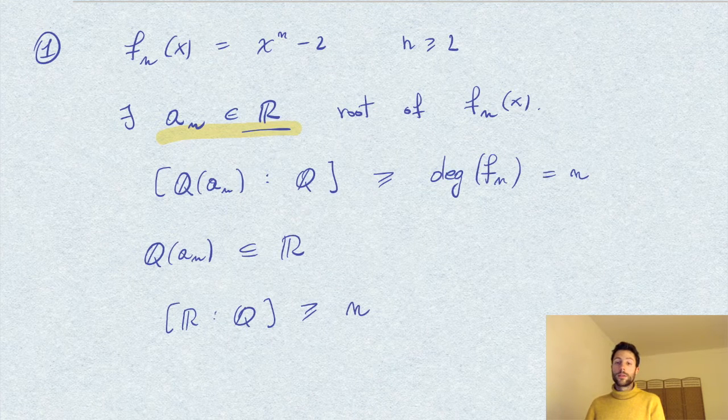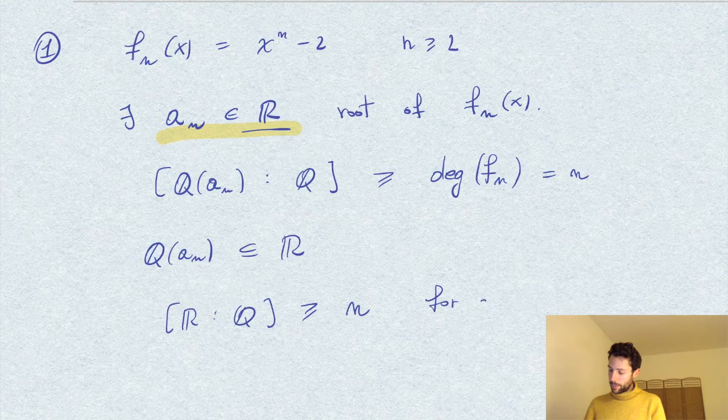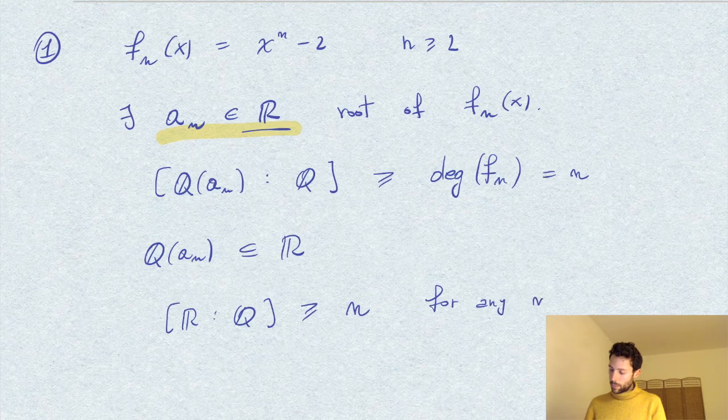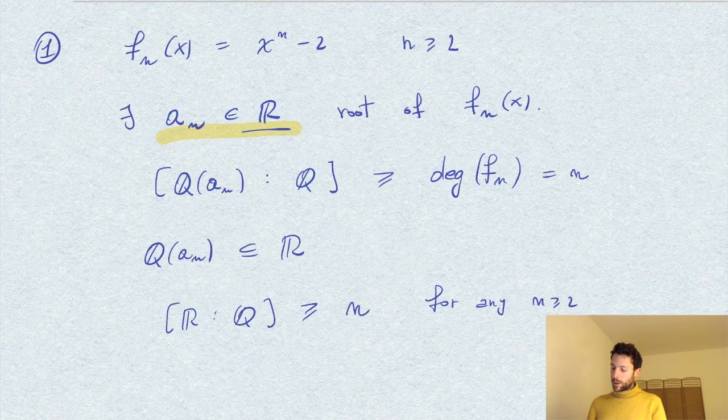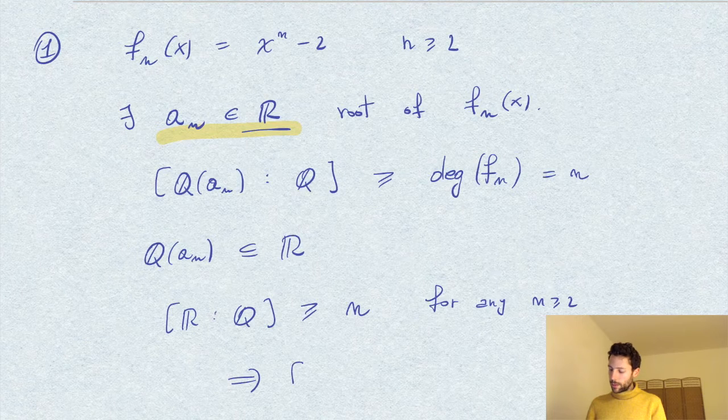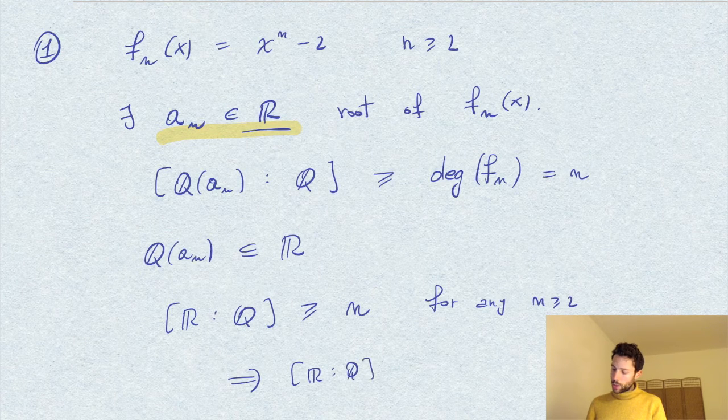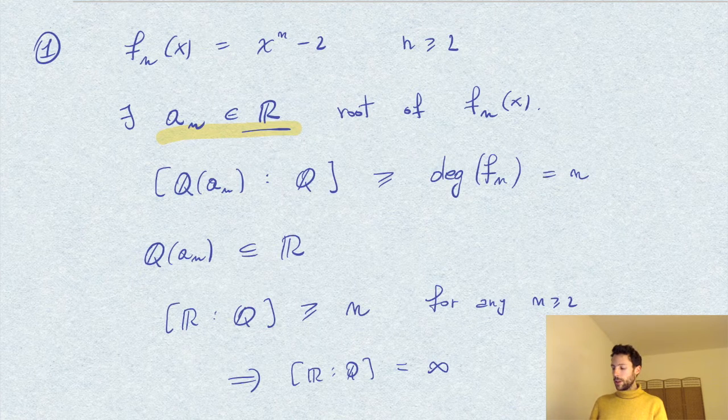And this is valid for any n. Therefore, we have that R over Q has infinite degree.